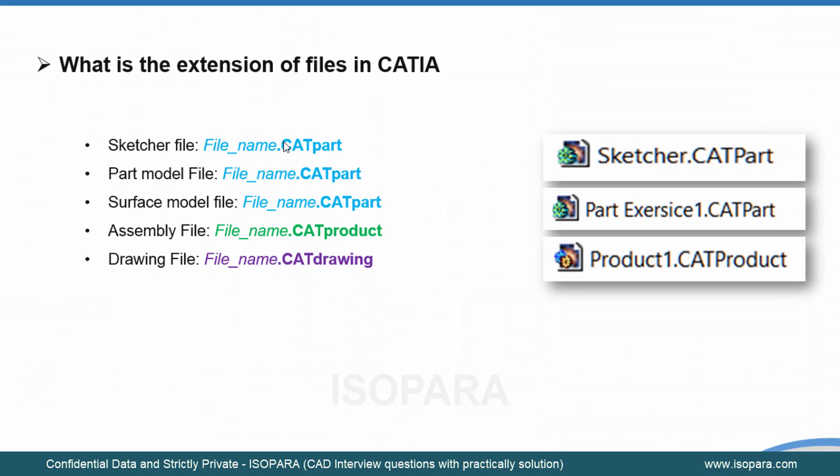The next question that can be asked is: what is the extension of files in CATIA? If we want to save a sketcher file, it will be saved with the extension .CATPart. A part model is also saved as .CATPart, and a surface model is also saved as .CATPart, while an assembly file is saved as .CATProduct, and a drawing file uses .CATDrawing as its extension.